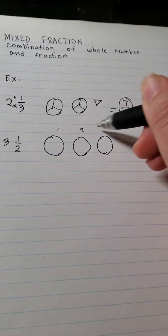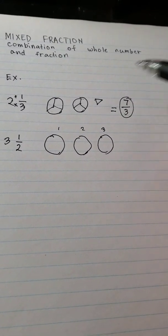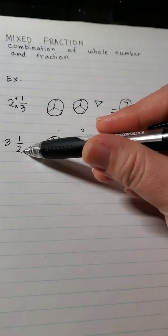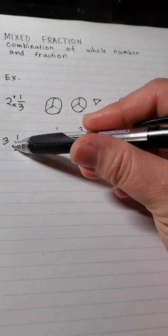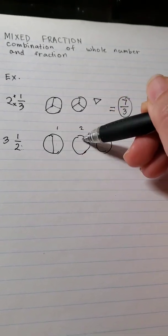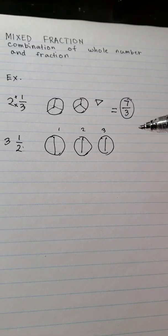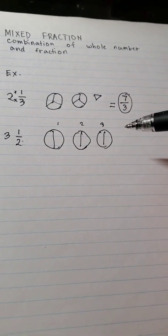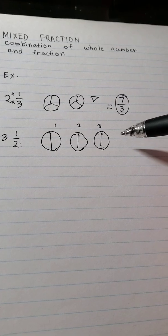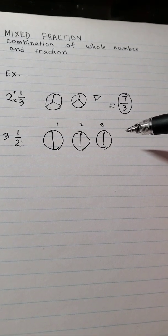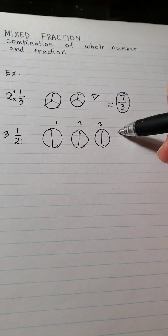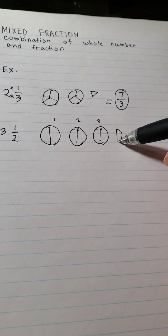So this is 1, 2 and 3. And we have to divide it into 2 parts because the denominator is 2. So it looks like that. The last one, so we already have 3 whole numbers and then now the last part is the half. So you just draw the 1 half part of it.